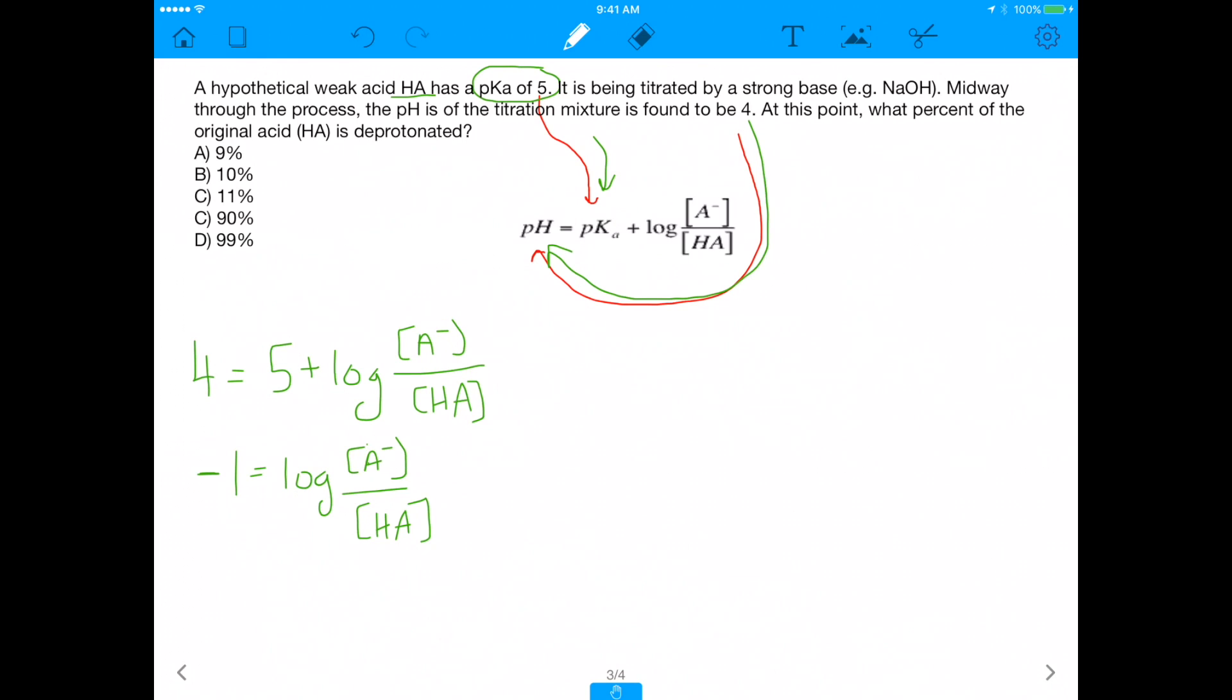And now, remember, this is where we're going to have to remember that this is a log base 10. And if we remember how logs work, this ultimately ends up being 10 to the negative 1, which is equal to 1 tenth. So if you didn't know that, you can pull out your handy dandy calculator. But on the MCAT, you don't get a calculator, so you should get used to doing negative exponents. 10 to the negative 1, which is equal to 1 tenth, is equal to A minus over HA. And that's ultimately what we get.